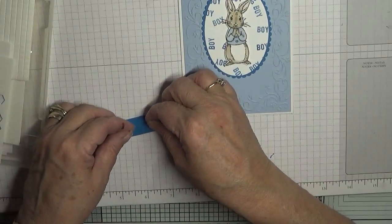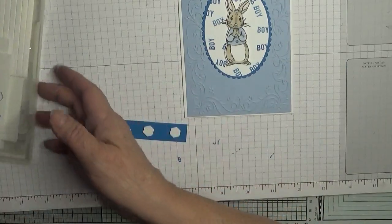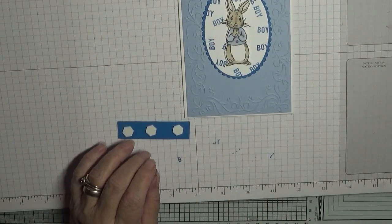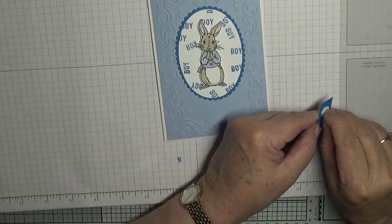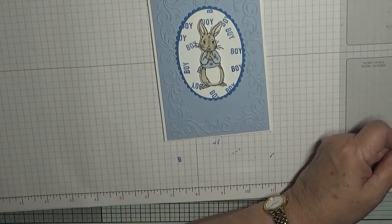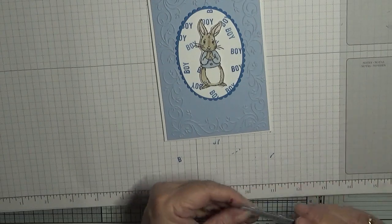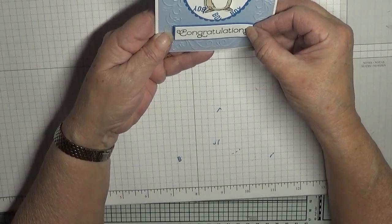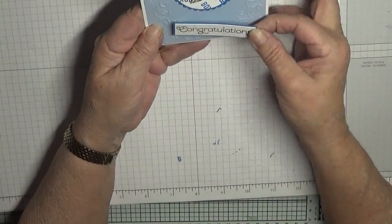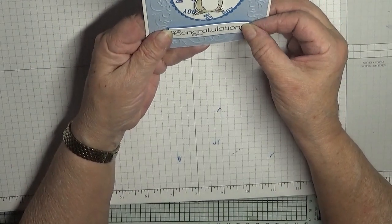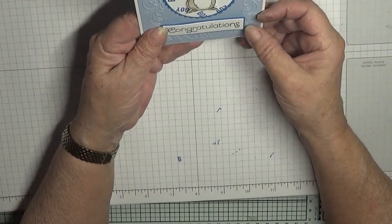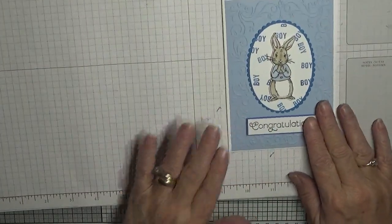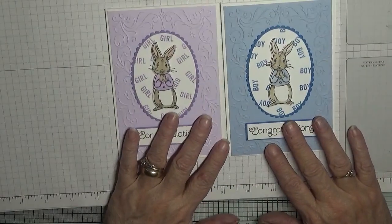We line up his whiskers and we place this at the bottom. There we are, a little boy one and a little girl one.